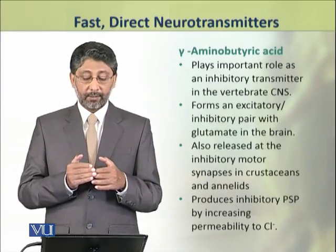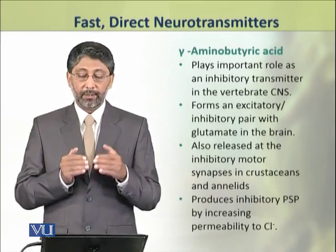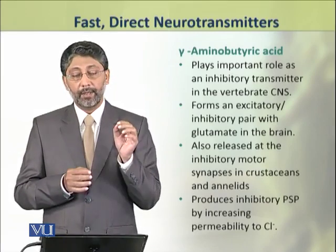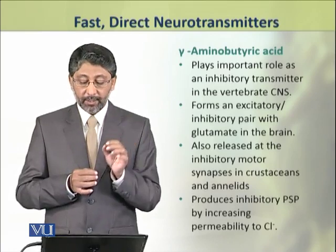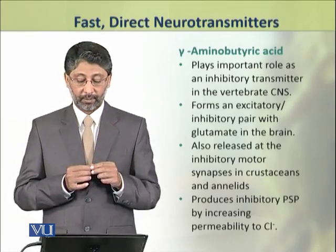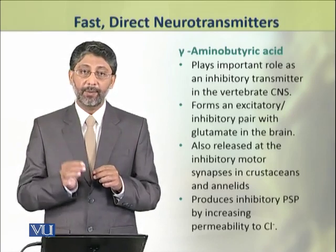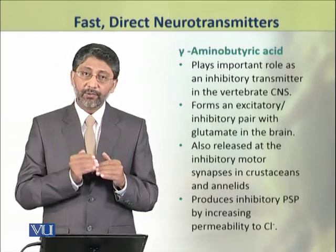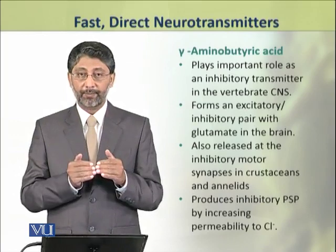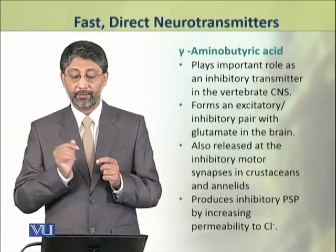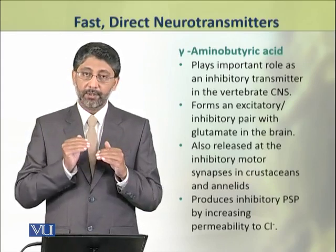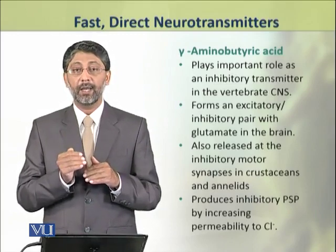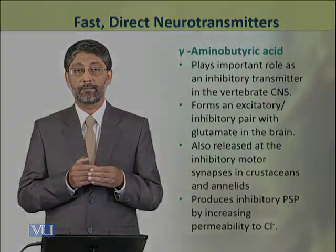The second inhibitory fast-acting neurotransmitter is gamma-aminobutyric acid (GABA). This plays an inhibitory role in the vertebrate central nervous system. It forms an excitatory-inhibitory pair with glutamate in the brain. It is also released at the inhibitory motor synapses in crustaceans and annelids. It produces inhibitory post-synaptic potentials by increasing the permeability of chloride ions.